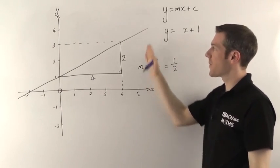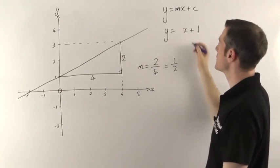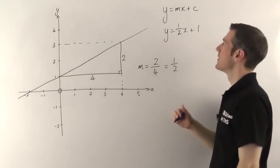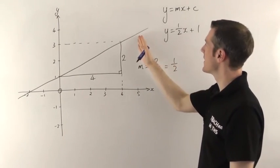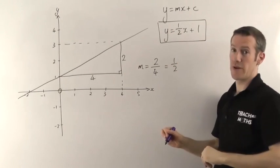So the gradient of this straight line is a half, so the number that goes in front of the x is a half, and you write it just like that. So the final equation for this line here will be y equals a half x plus 1.